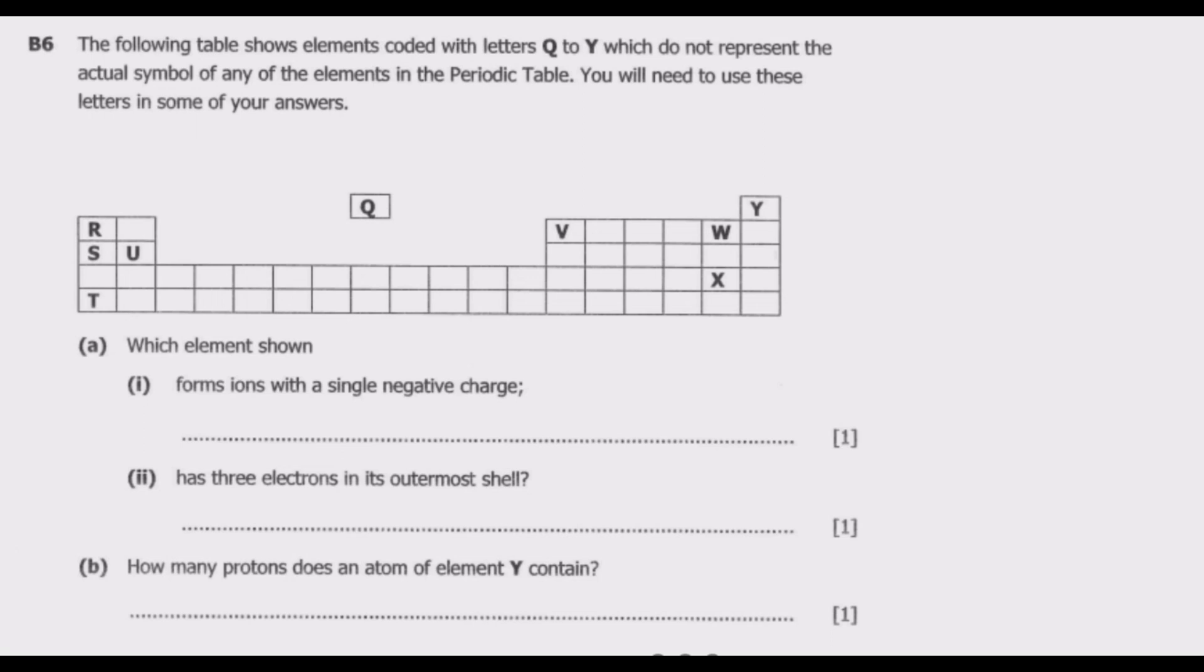The following table shows elements coded with letters Q to Y, which do not represent the actual symbols of the elements in the periodic table. You'll need to use these letters in some of your answers. Question A(i): Which element shown forms ions with a single negative charge? A single negative charge implies that this is a non-metal element.